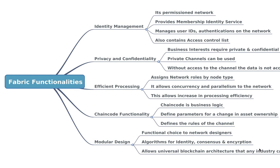The first functionality is identity management. It enables the network to provide a membership identity service, which will help to manage the user network IDs and authenticates all participants in the network. There will be different organizations and each organization will have different participants.